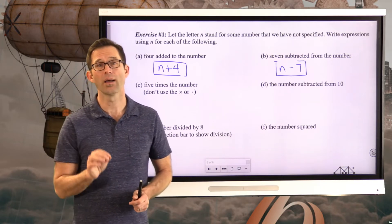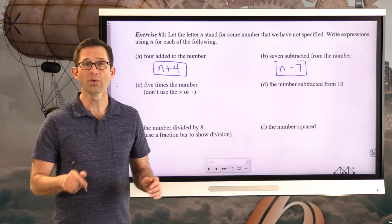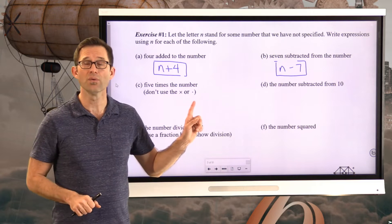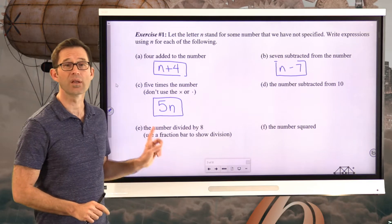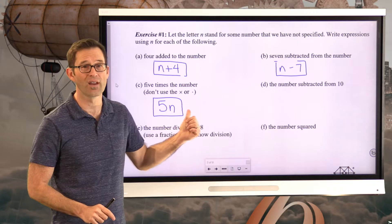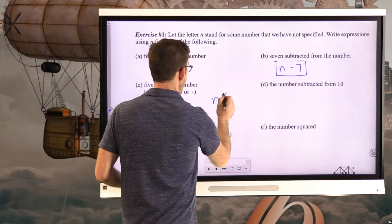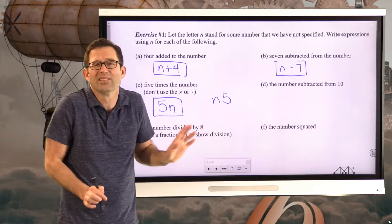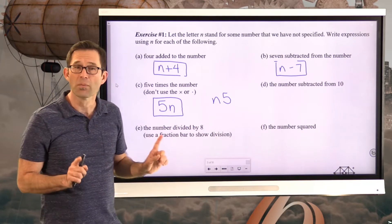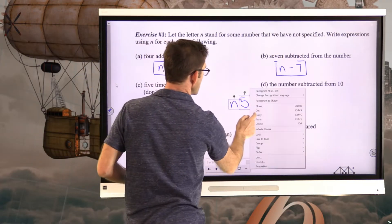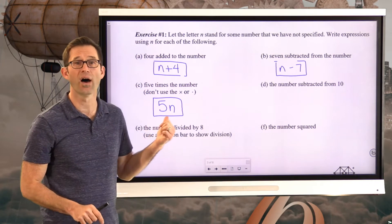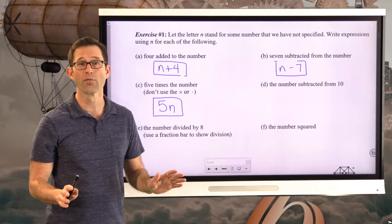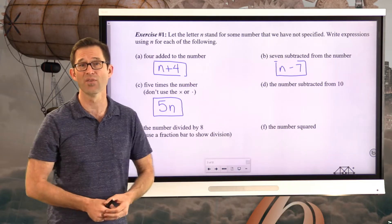Letter C: five times the number. Here's something very important — we're not going to use the multiplication symbol anymore, not even the dot. Anytime we have a number sitting right beside a variable, universally to the left of it, it means multiply. So five times N is written as 5N. We'll see that over and over in every lesson that involves algebra from now on.